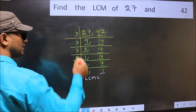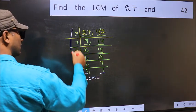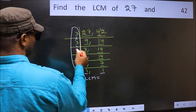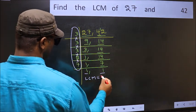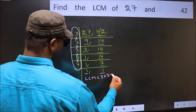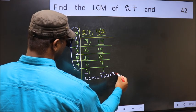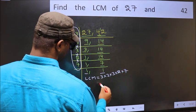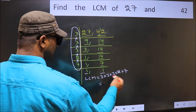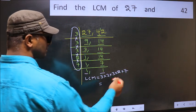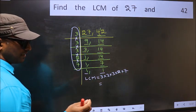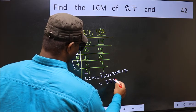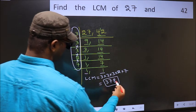So our LCM is the product of these numbers: 3 × 3 × 3 × 3 × 2 × 7. When we multiply these numbers we get 378. So 378 is our LCM.